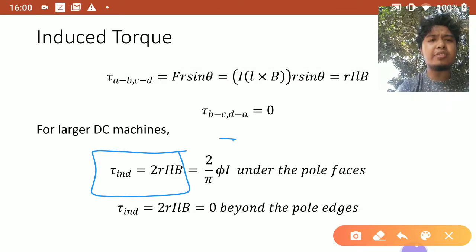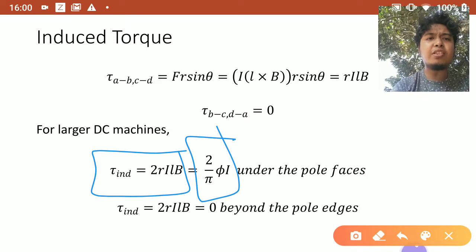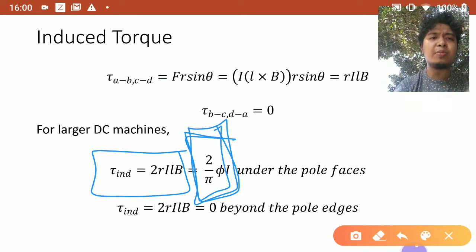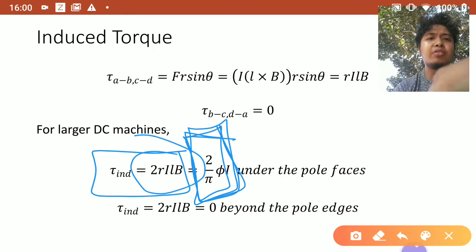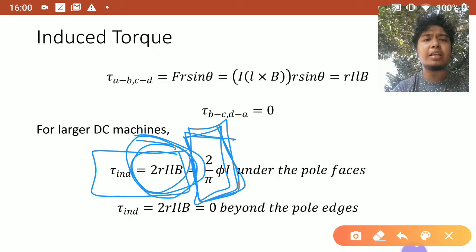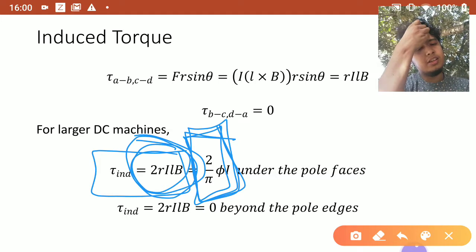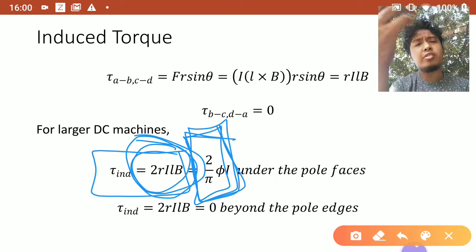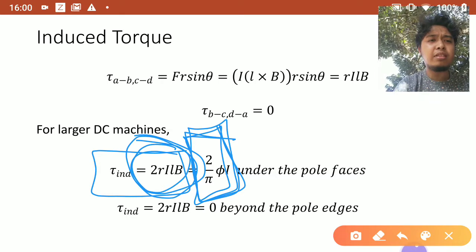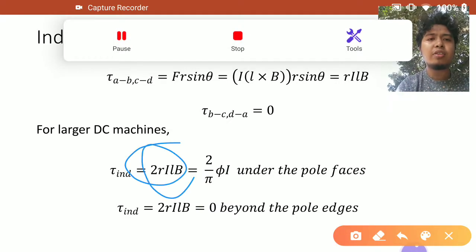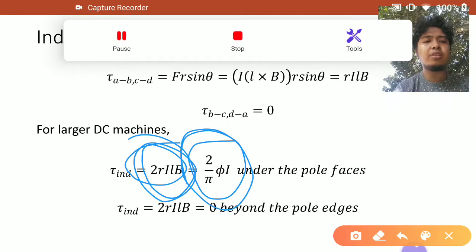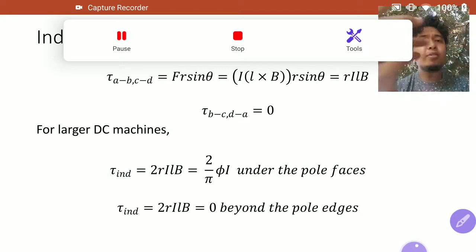So this is just for larger DC machines. This is basically a simplification of this formula. But there are certain assumptions there, but I think it's safer to just use this one because this is just a simplification. So that's just it.